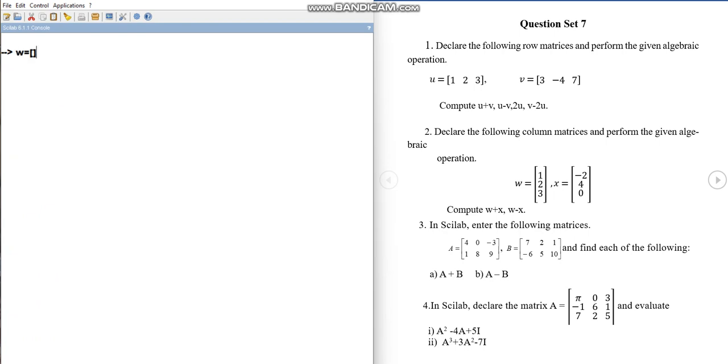So w is equal to, for the first row is 1, the second row contains 2. So the rows are separated by semicolons. So this way, w is a column matrix of order 3 by 1.